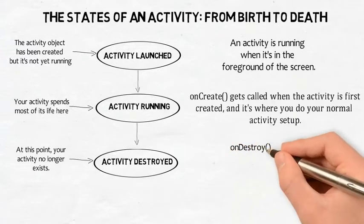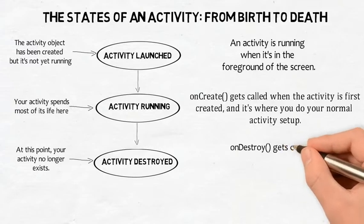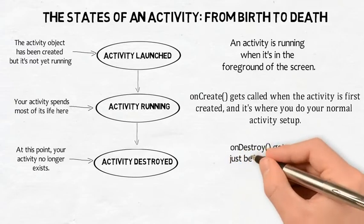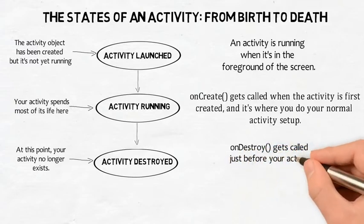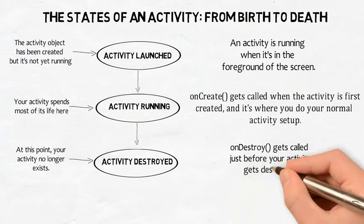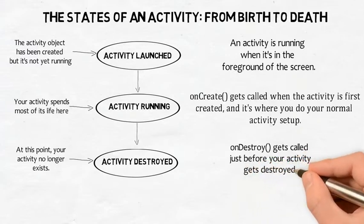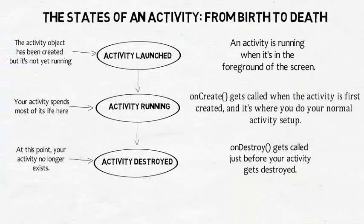The onDestroy method is the final call you get before the activity is destroyed. There are a number of situations in which an activity can get destroyed — for example, if it's been told to finish, if the activity is being recreated due to a change in device configuration, or if Android has decided to destroy the activity in order to save space.